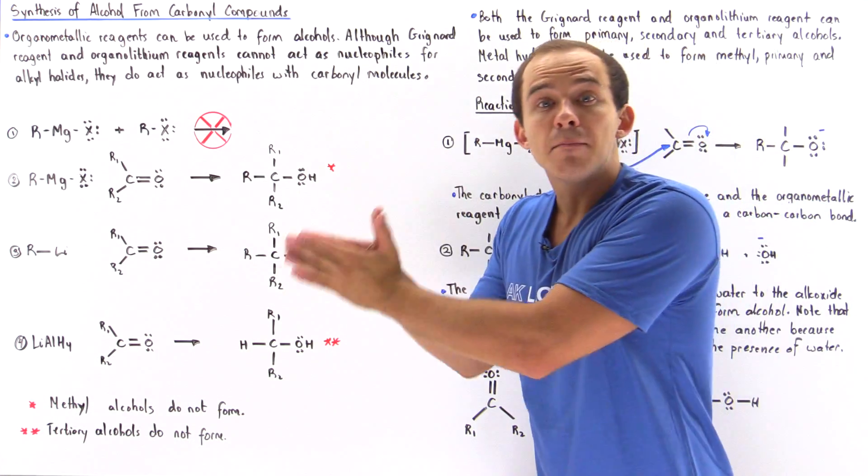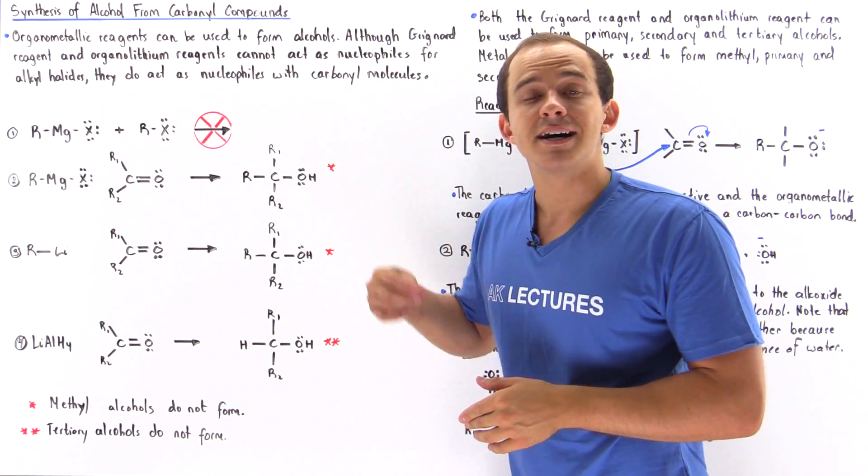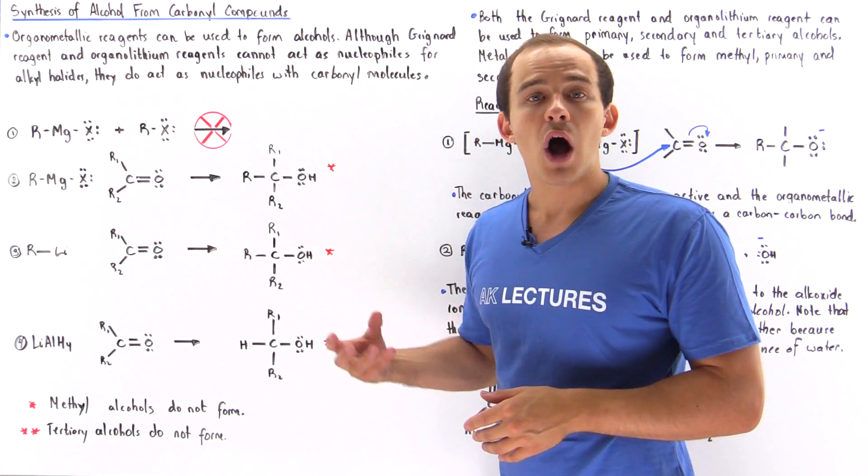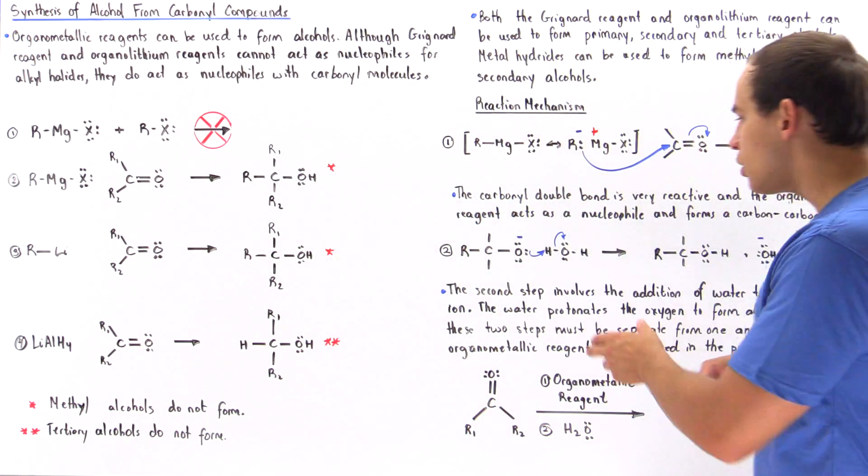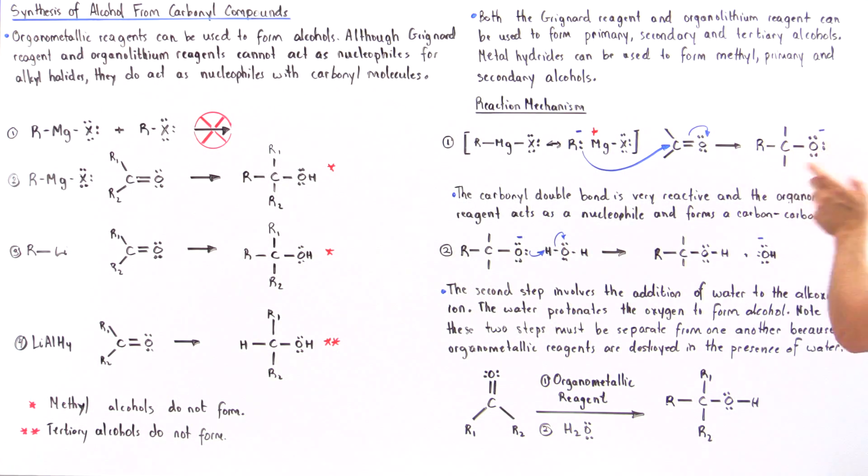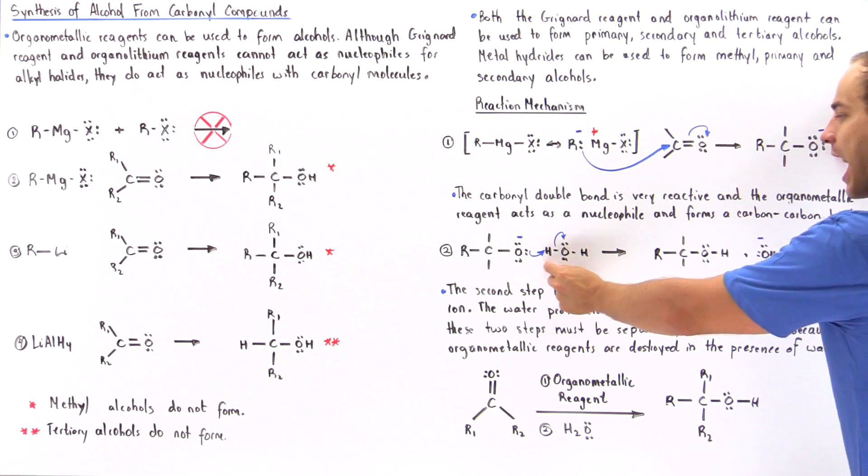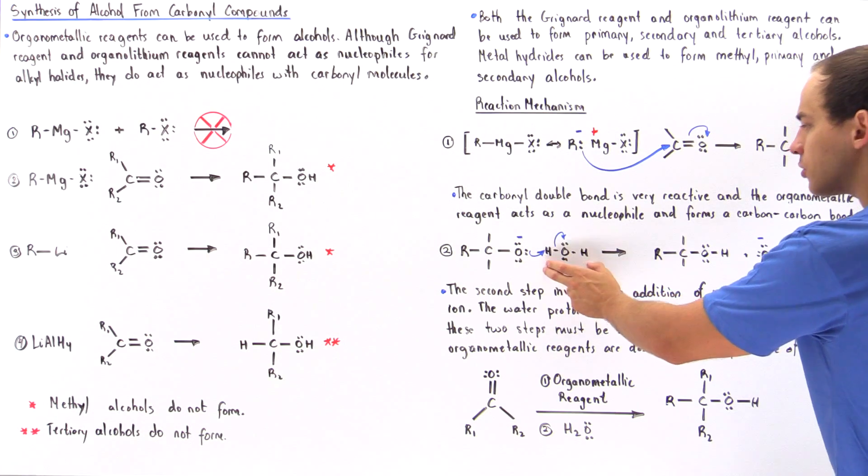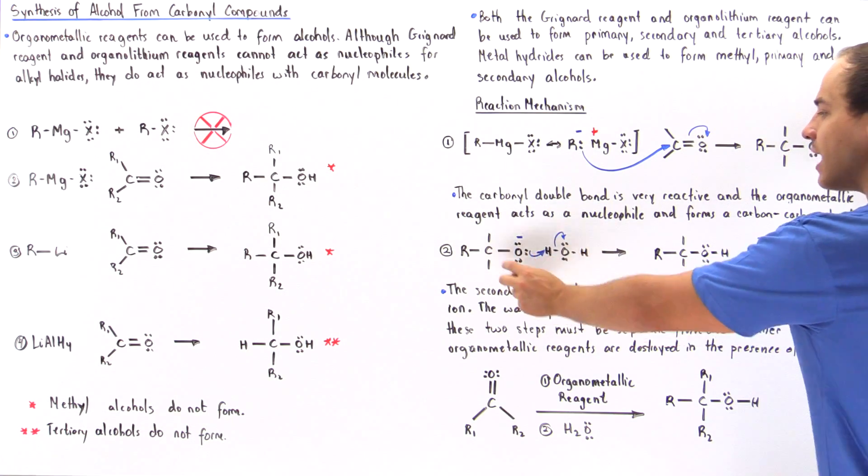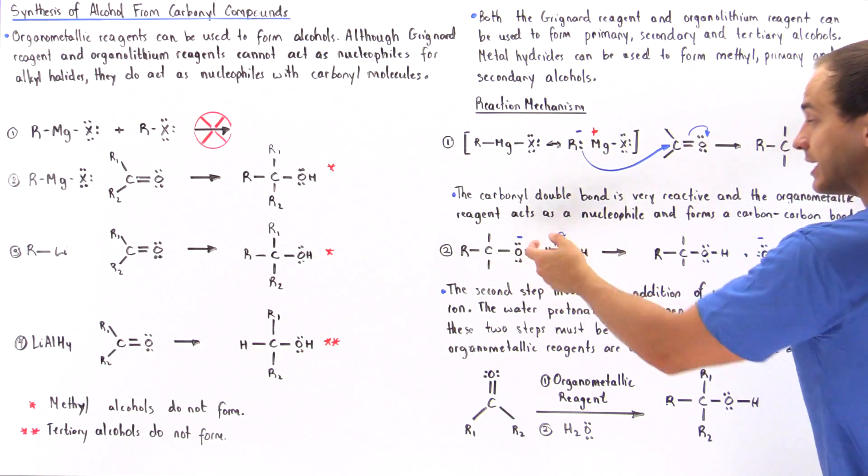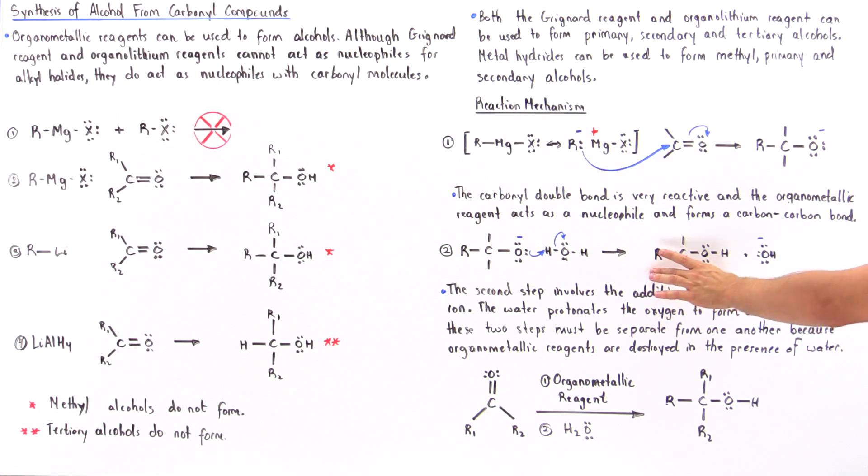Now, the second step, which is separated from step 1, is the addition of water. So why should we add water? Well, if we add water, this alkoxide ion that is produced in step 1 can now grab an H atom. It acts as a Lewis base, grabs the H atom from water which acts as the Lewis acid, and this alkoxide ion, the oxygen, is protonated and we form the final alcohol product as well as this hydroxide.